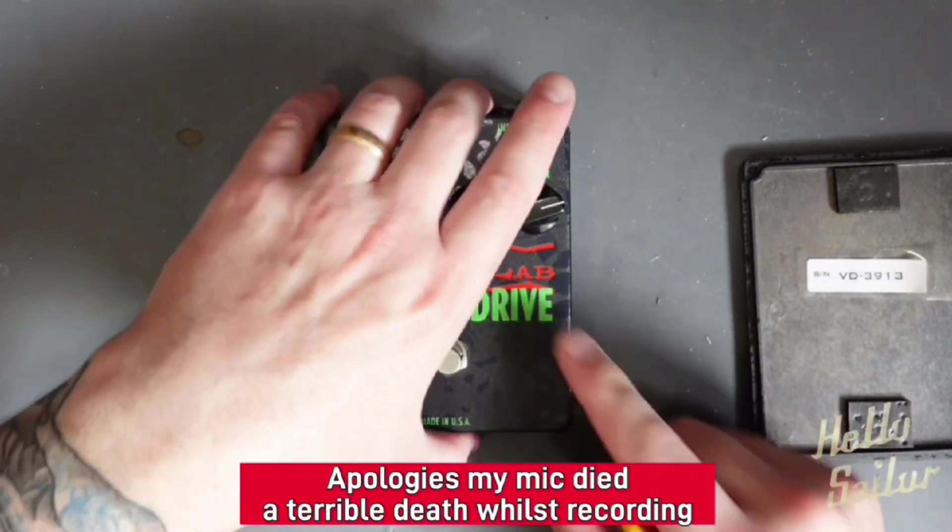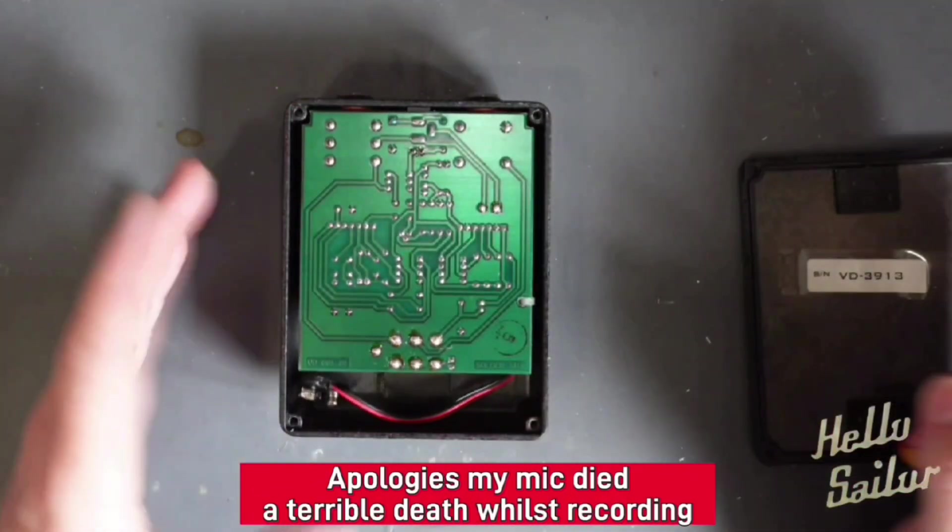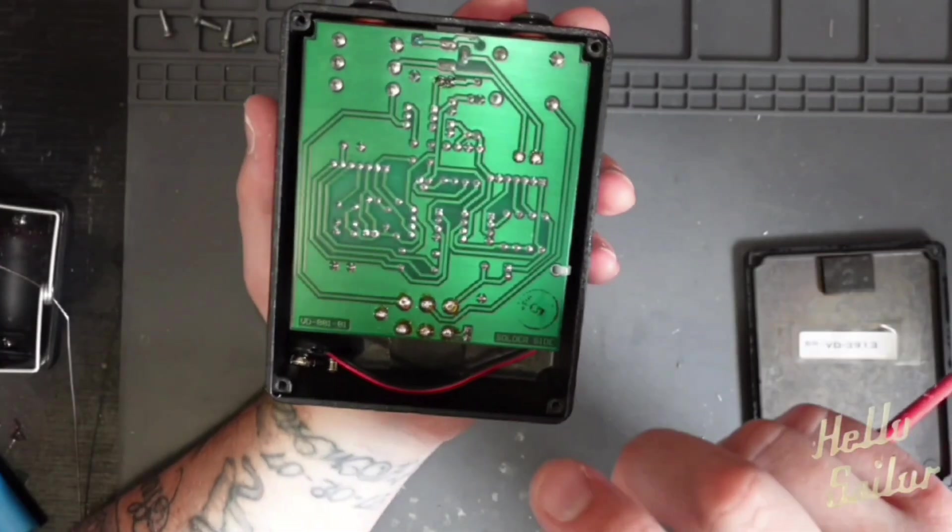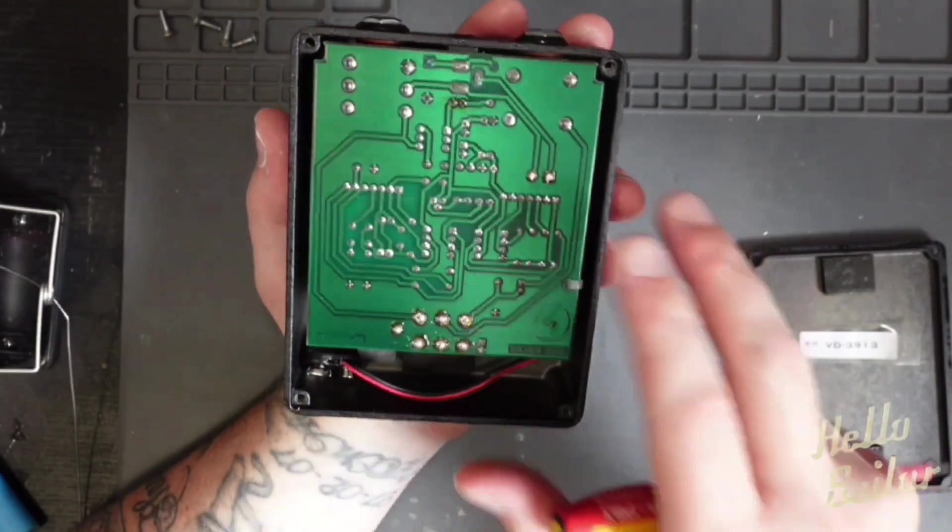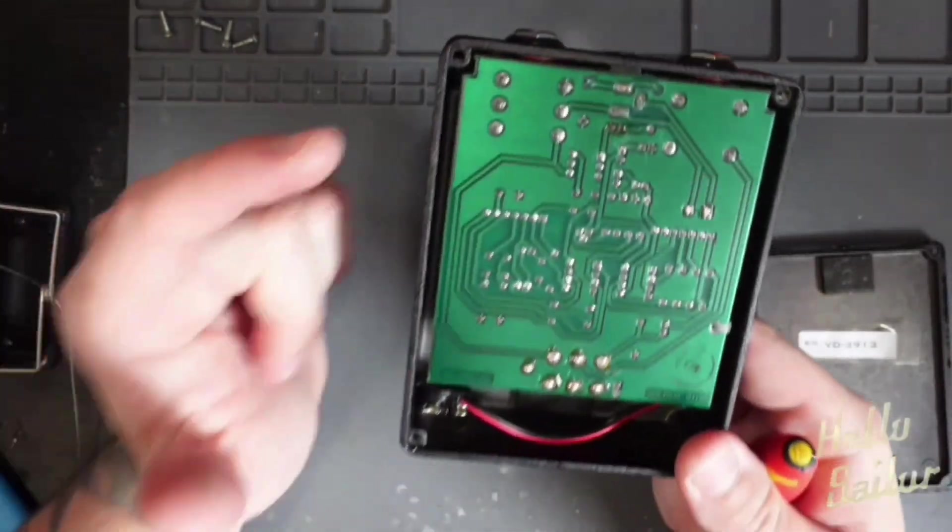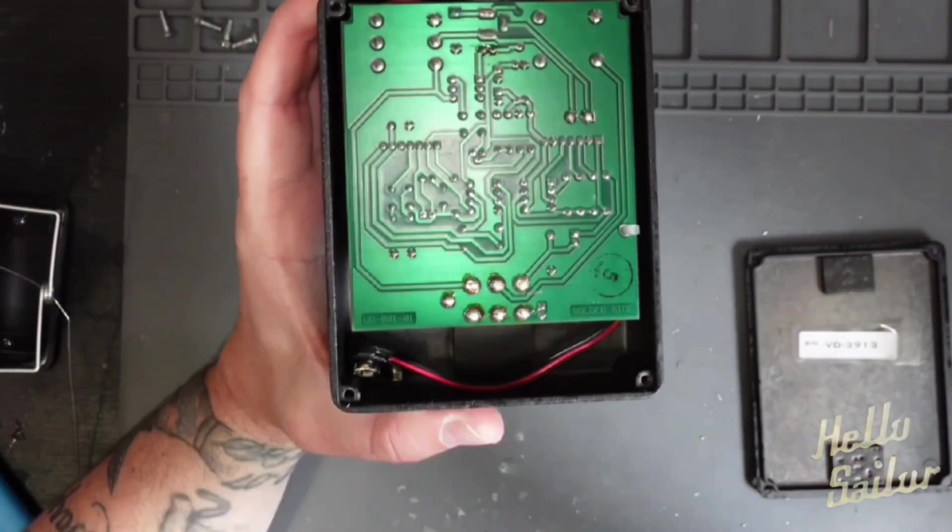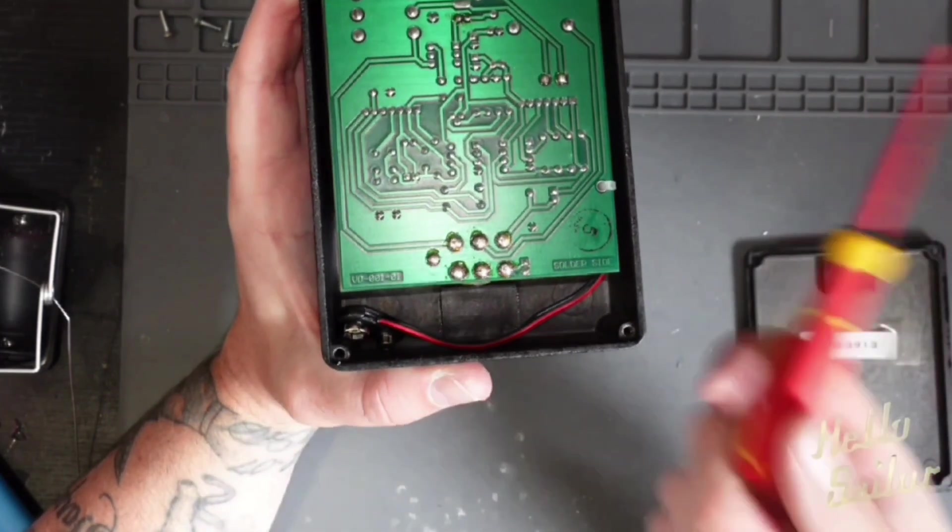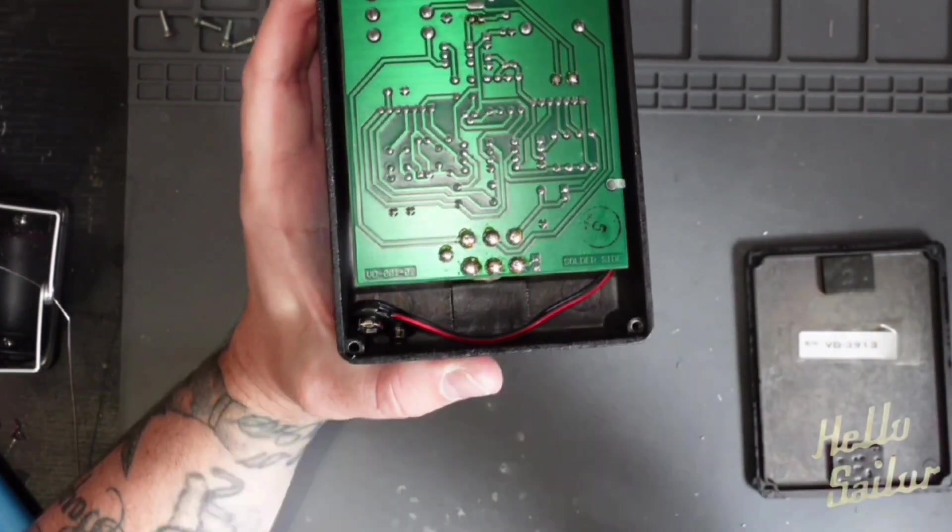So this is it, Voodoo Labs Sparkle Drive. Turn it over, I've got the back off already and there's a nice neat circuit board. Before I do anything, before I start taking anything apart, I'm going to get my audio probe. If you don't know what an audio probe is, please head to the video above where I describe how to make an audio probe and how to use it.